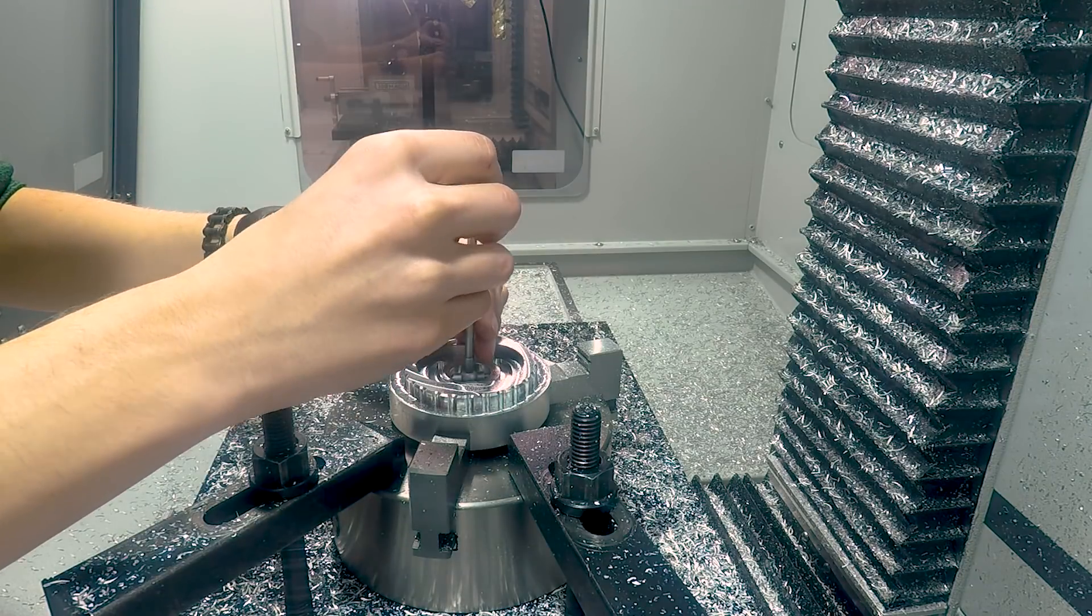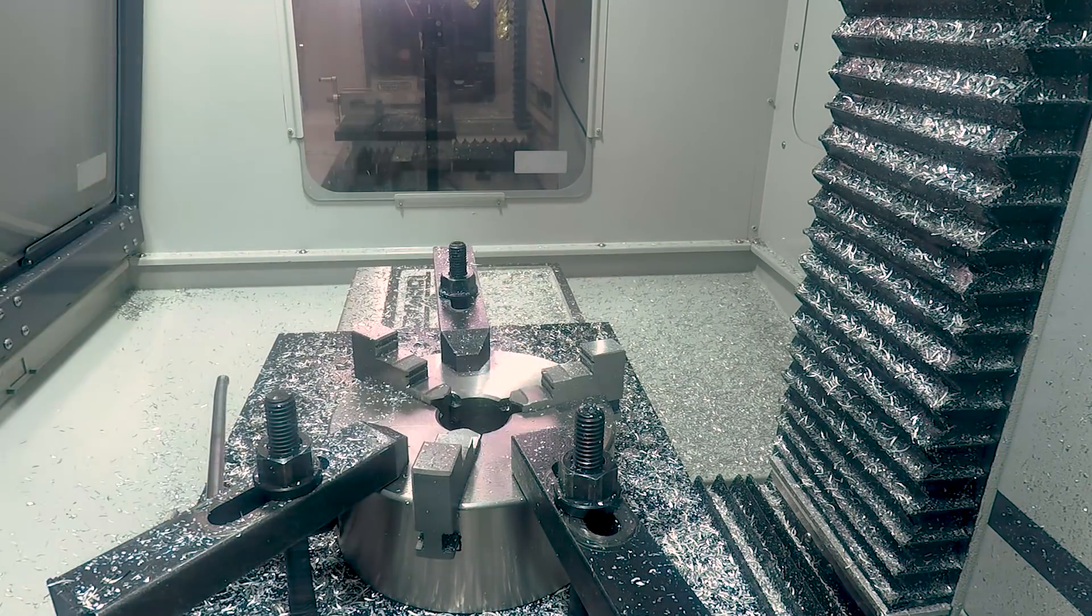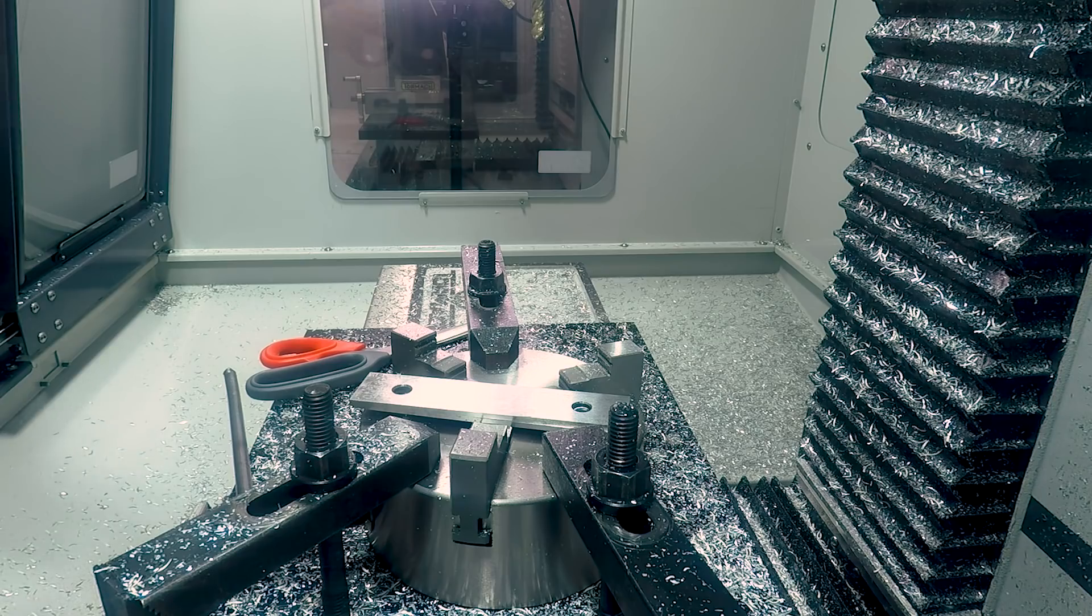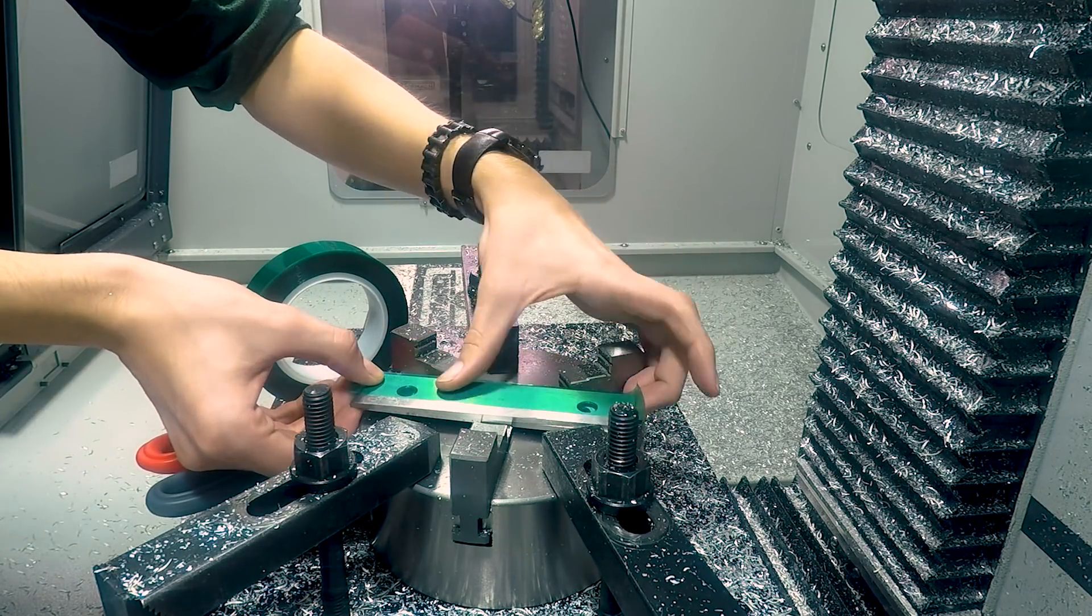Right here we're using a telescoping gauge just to check this diameter before I take it out of the chuck so I don't have to re-indicate in case I need to bring that bore out to fit our bearing.